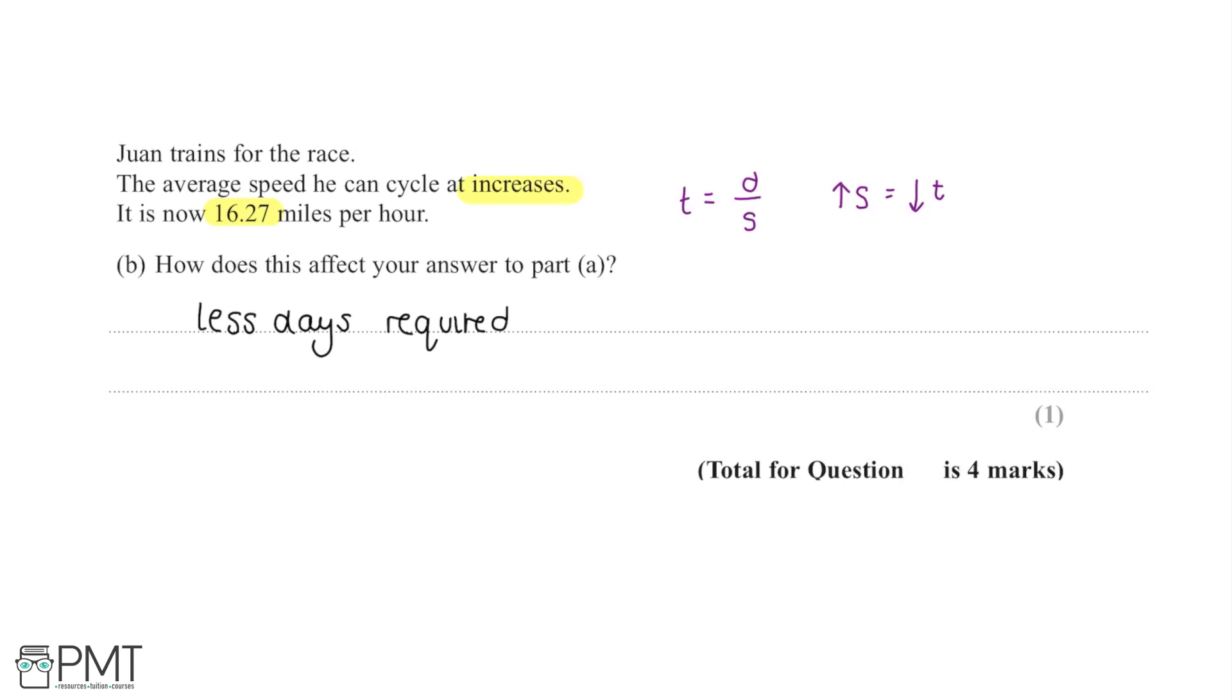Alternatively, we could have gone down the estimate route and said that 16.27 could still be rounded down to 15 like we did in the previous part, and because we're working with estimates, this wouldn't actually affect our answer. That would also gain us the mark here. Either way of going about this question would gain us this single mark and bring us to the end of this question.